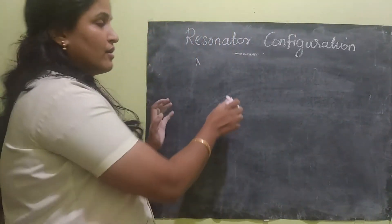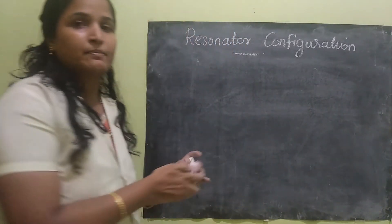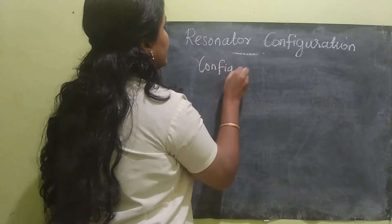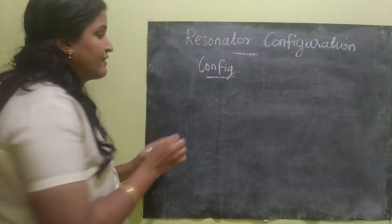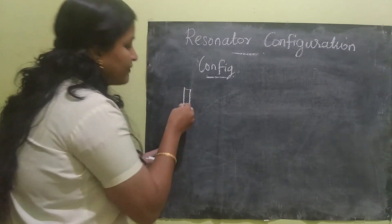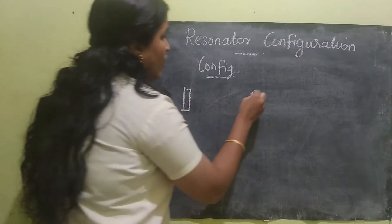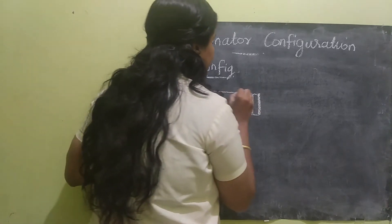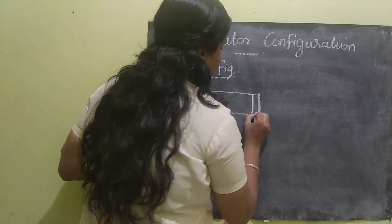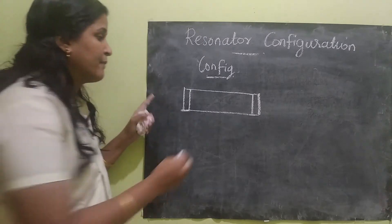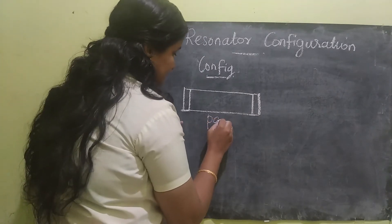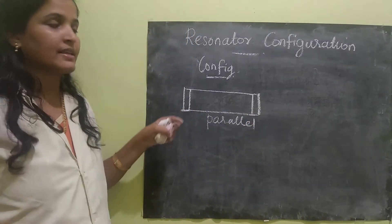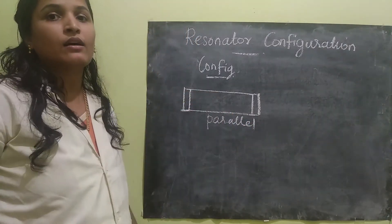Now let us see the various configurations. The first is the very basic one, where we use two lenses or two reflecting mirrors and the cavity is like this. The name of this configuration is 'parallel,' since the cavity is parallel.